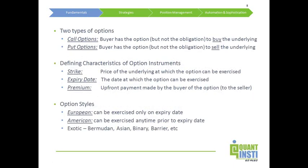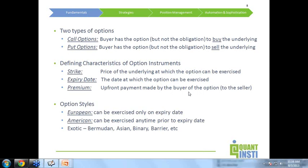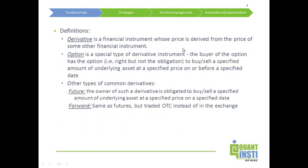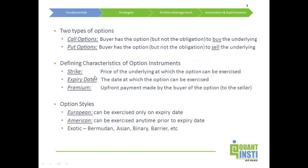Having defined options, the different types of options are call options and put options. In case of call options, the buyer has the right but not the obligation to buy the underlying. In case of put options, it's the right but not the obligation to sell. The three characteristics of option instruments are: the specific price at which the underlying can be bought or sold (the strike), the date on or before which the option can be exercised (the expiry date), and the upfront premium that the buyer pays to the seller or writer of the option.